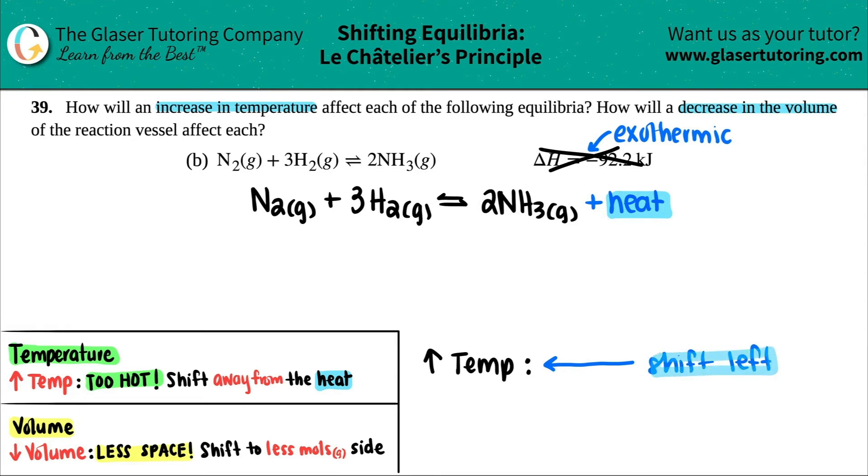Now, what does that really mean? That means that if you're going in this direction, your reactants will increase and your products will decrease. That's it.